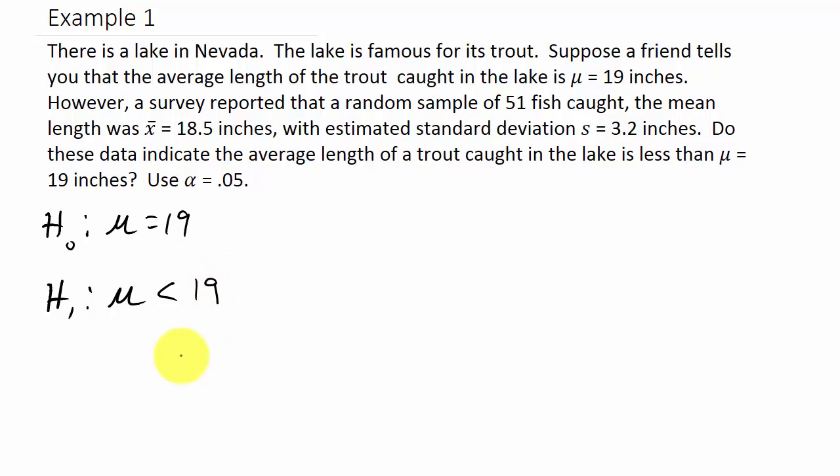Now we need to calculate our test statistic t which is x bar minus mu over s divided by square root of n, where x bar is 18.5, mu is 19, s is 3.2, and n is 51. We're going to need our degrees of freedom which is n minus 1 which equals 50. We need the degrees of freedom to look up in our student's t distribution table.